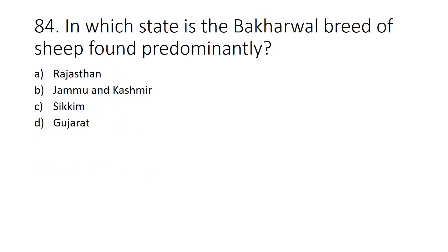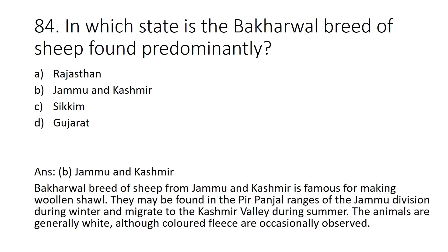In which state is the Bukarwal breed of sheep found predominantly? Option A: Rajasthan, Option B: Jammu Kashmir, Option C: Sikkim, Option D: Gujarat. Answer: Option B, Jammu Kashmir. The Bukarwal breed of sheep from Jammu Kashmir is famous for making wool. They are found in the ranges of the Jammu division during winter and migrate to the Kashmir valley during summer. The animals are generally white, although colored fleece is occasionally observed.